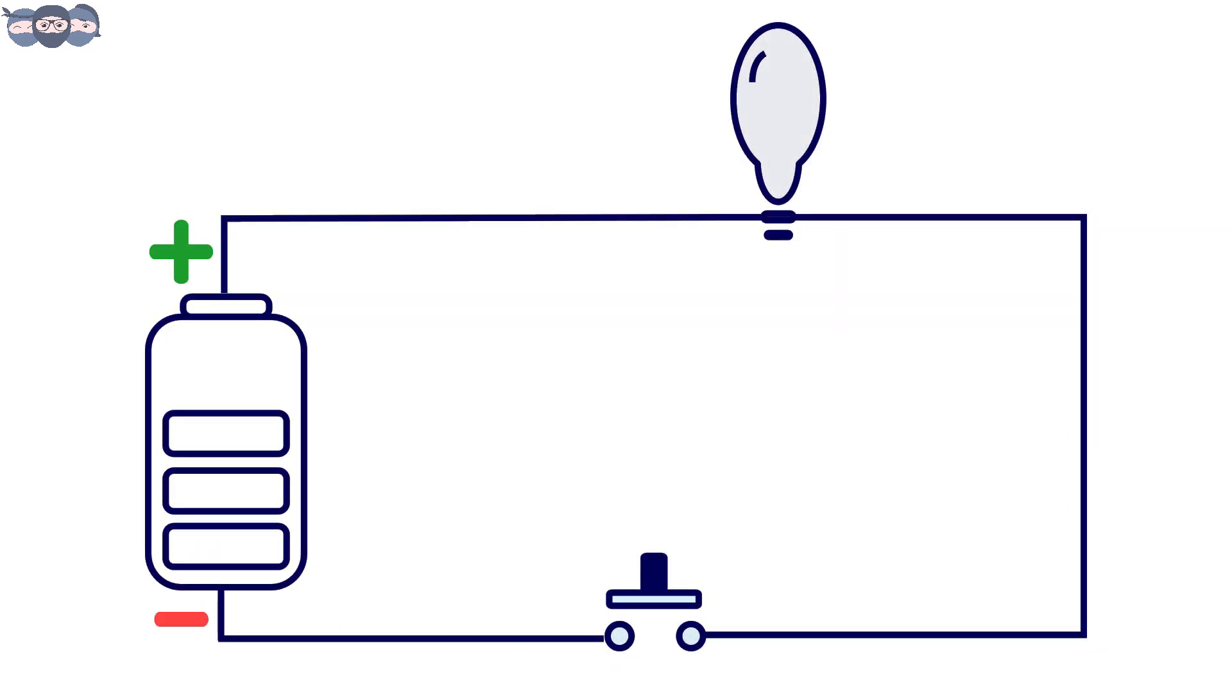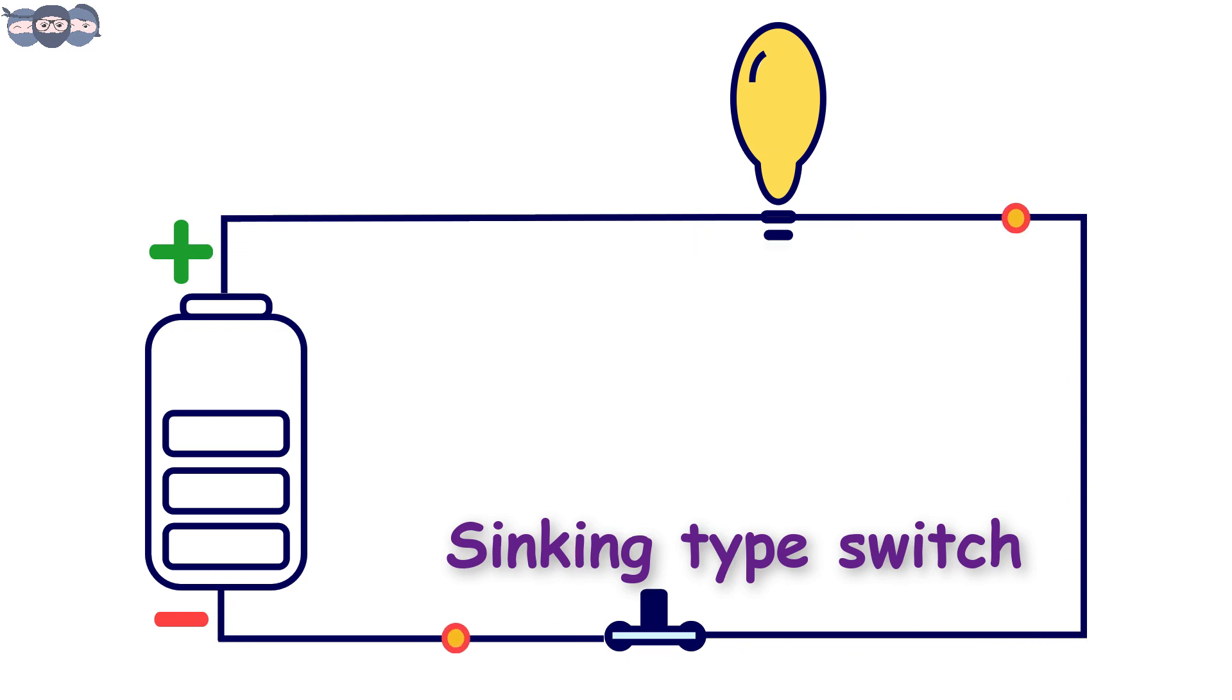Now let us modify this circuit a bit. Let us first connect the lamp to the power source and then connect the switch in series. In this circuit, when we close the switch, the lamp turns on. However, here the current first enters the lamp and then the switch. Here the switch acts as a sinking type and the current sinks in the switch.